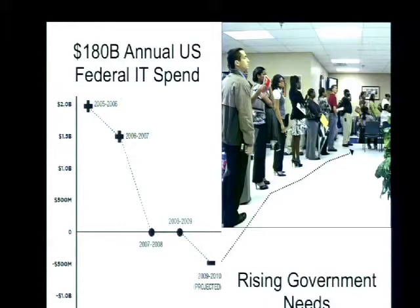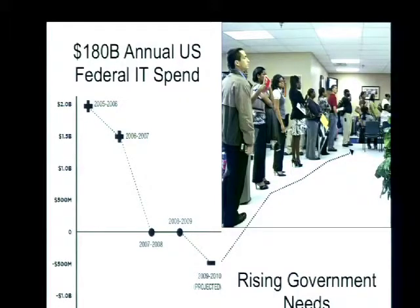The US federal government spends about $180 billion on technology every year, just the US federal government alone. Starting in 2008 we hit a real economic crisis in the US, and that continues to ripple through a lot of the world. So there's an imperative to not improve government simply by throwing more money at the problem but actually to do government technology more efficiently. And at the same time, when we're in economic tough times, government services are needed more than ever.